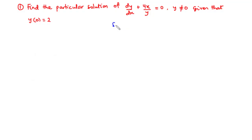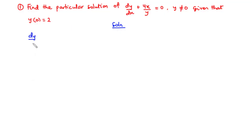Let's try to solve this example. We are given the differential equation dy/dx plus 4x over y equals 0, and we have the initial condition y(0) equals 2. This means we have x equal to 0 and y equal to 2. We are asked to find the particular solution, so we first need to find the general solution from this differential equation. We have dy/dx plus 4x over y equals 0.